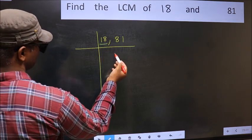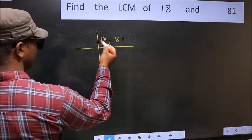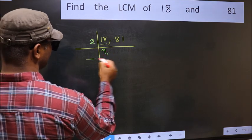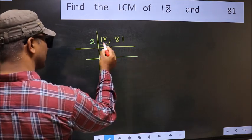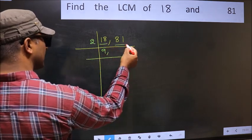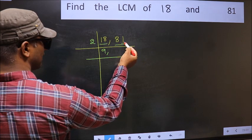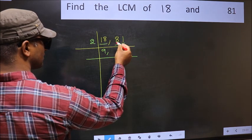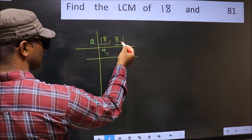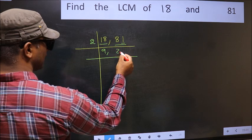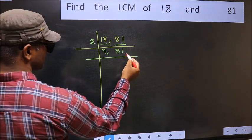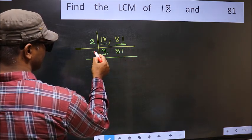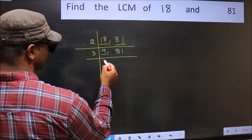18 is 2 nines. For the other number 81, the last digit is 1, which is not even, so 81 is not divisible by 2. Write it down as it is. Now here we have 9, and 9 is 3 times 3.